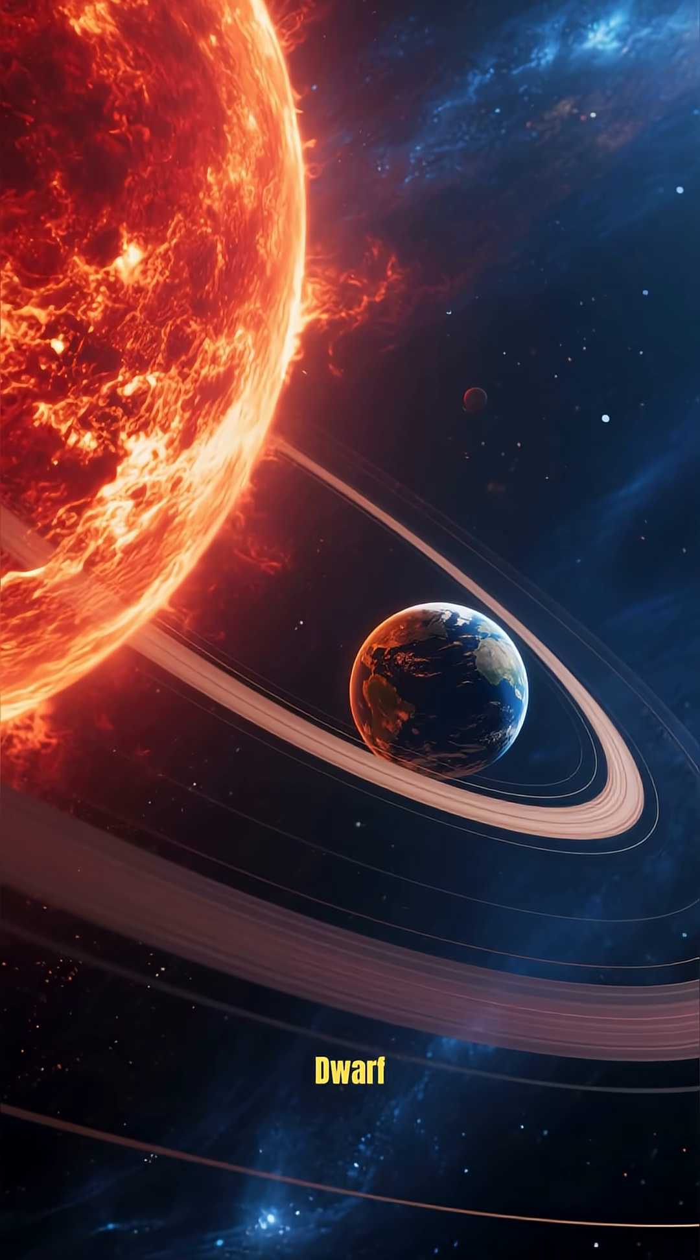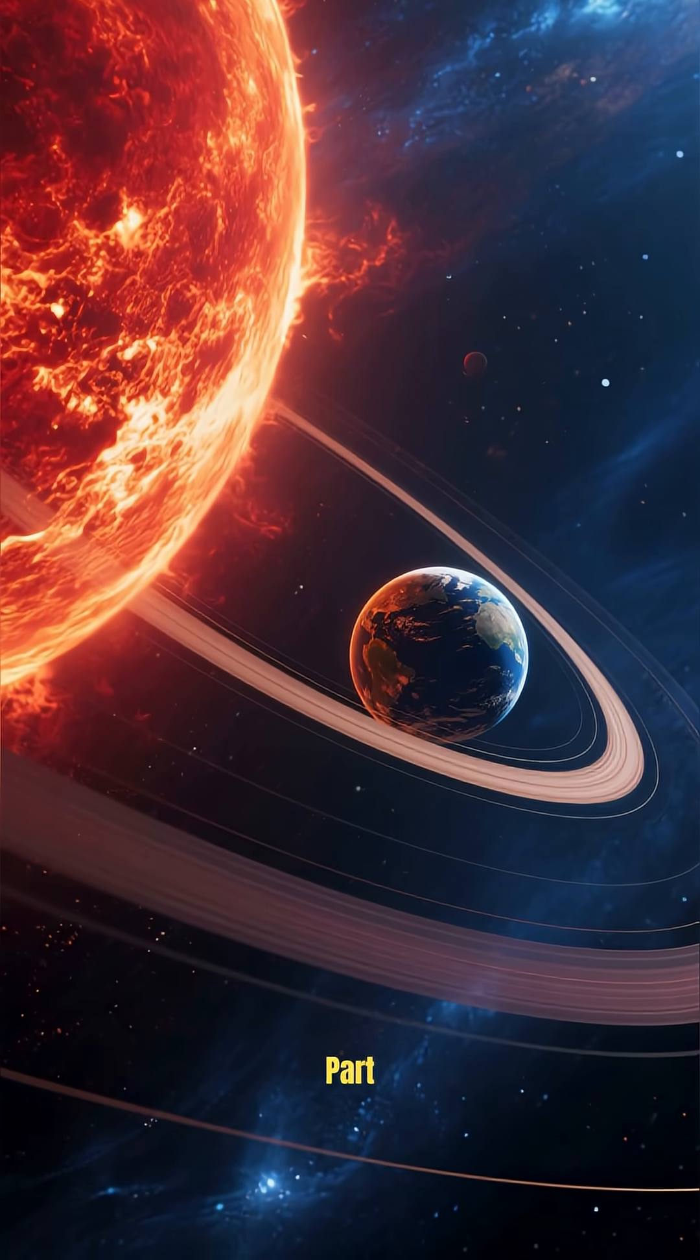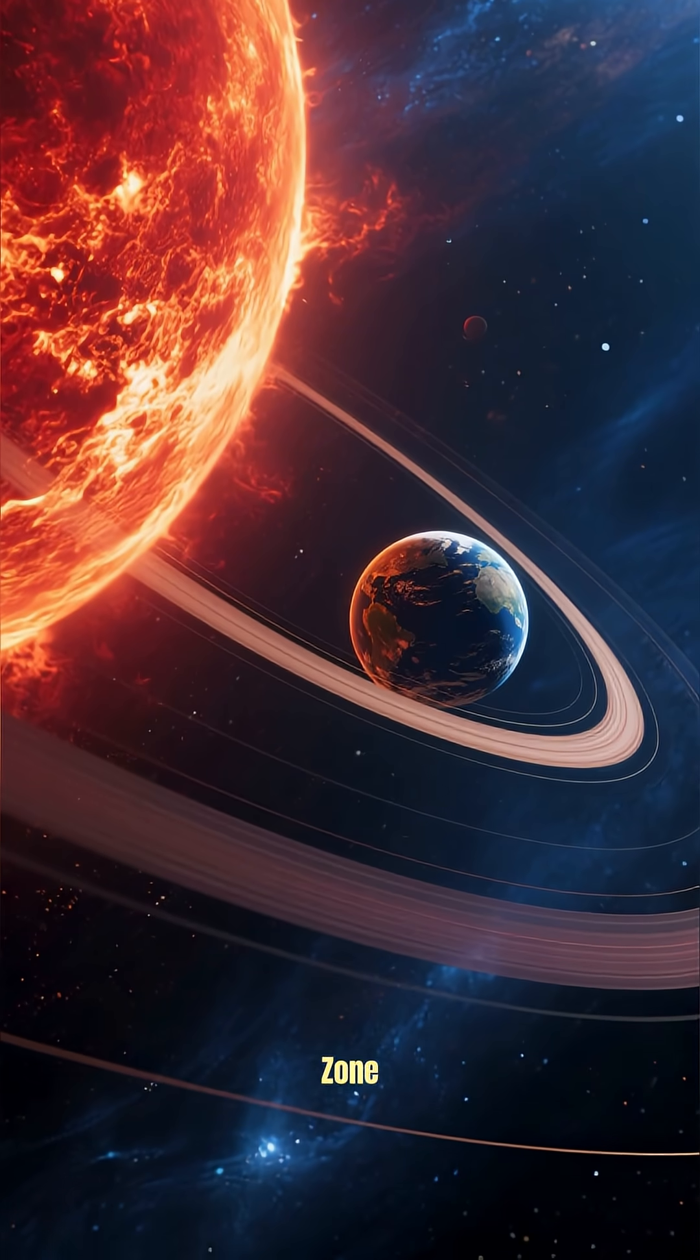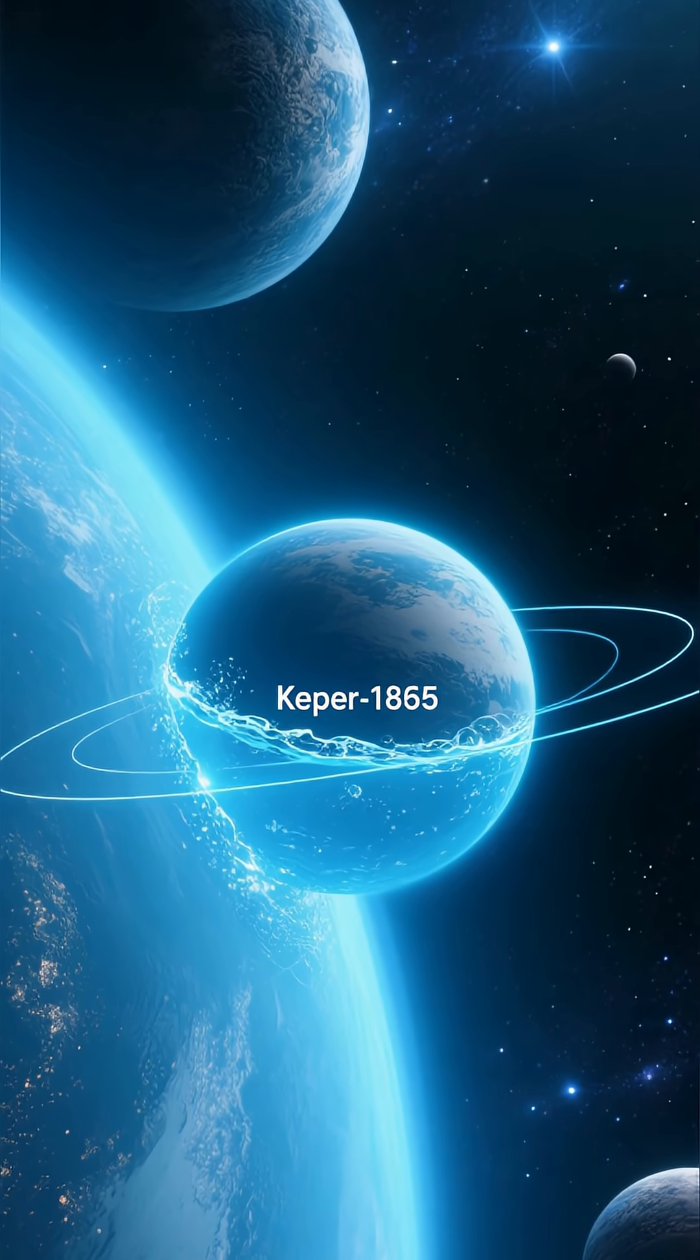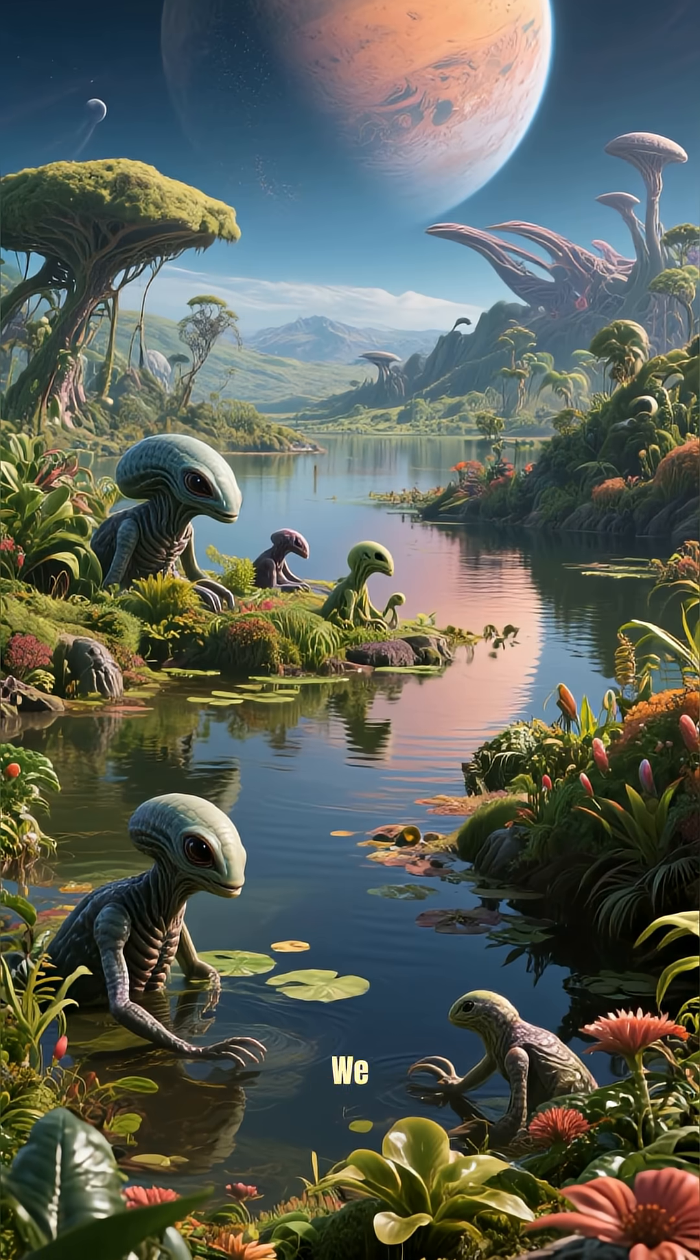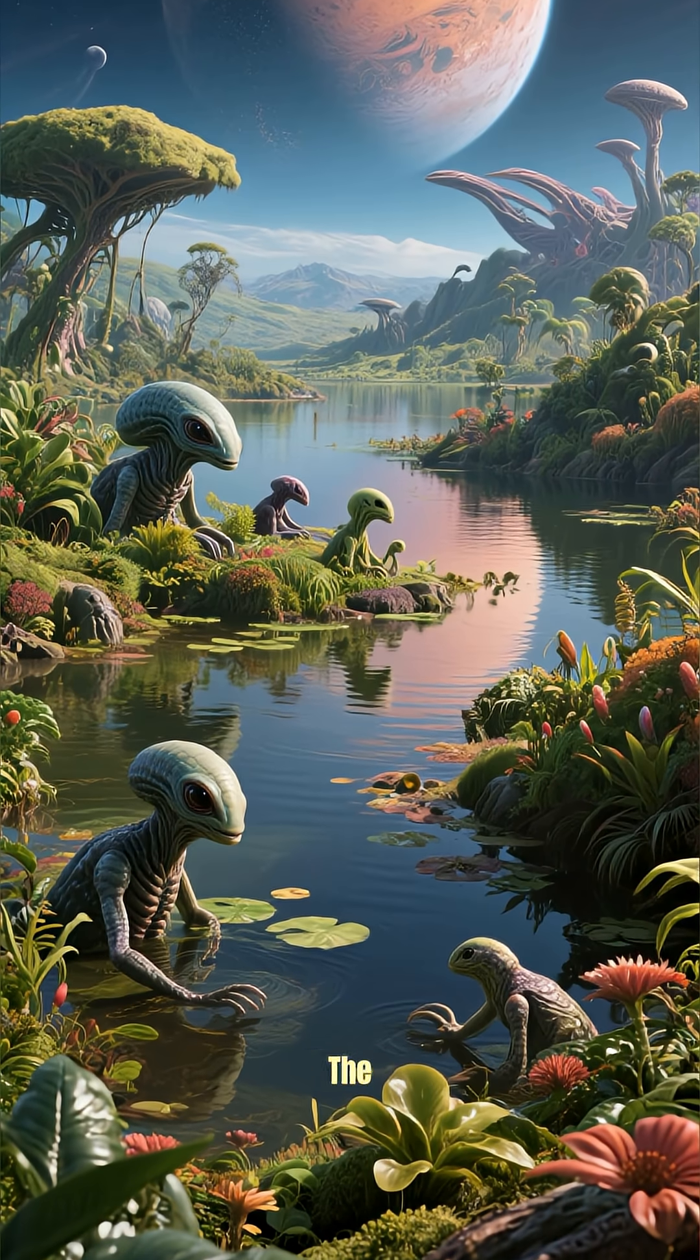It orbits a cool red dwarf star. And here's the exciting part. It sits perfectly within the habitable zone, that's the cosmic sweet spot where temperatures are just right for liquid water to exist on its surface. And as we all know, where there's water, there's the potential for life.